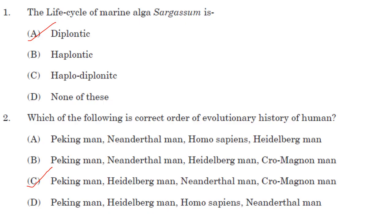Coming to the first question: the life cycle of marine alga Sargassum is a diplontic life cycle. It does not have any alternation of generation.